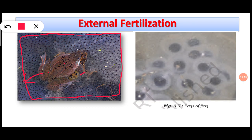However, a large number of both sperms and eggs are wasted, and some are eaten by predators. Many eggs will get fertilized and convert into zygotes, but many of those zygotes will not be able to complete their development.